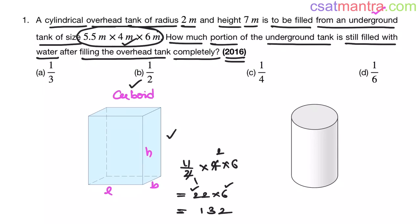So 6 twos are 12, giving us 120 plus 12, which is 132. Now we have a cylindrical tank overhead, and we have to fill the water from this cuboid underground tank into the cylindrical tank.